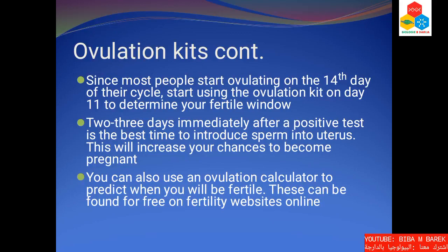Since most people start ovulating on the 14th day of their cycle, start using an ovulation kit on day 12 to determine your fertility window. Two to three days immediately after a positive test is the best time to introduce sperm into the uterus. This will increase your chances of becoming pregnant.